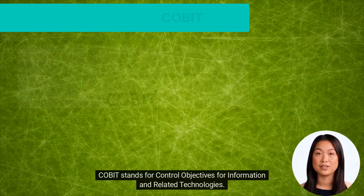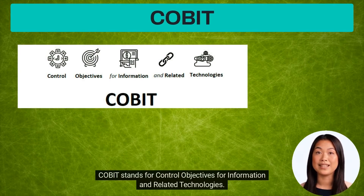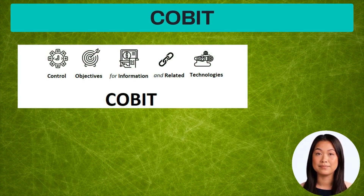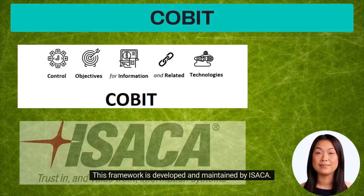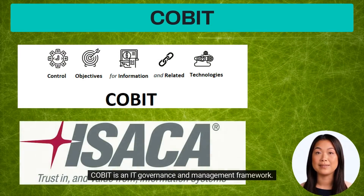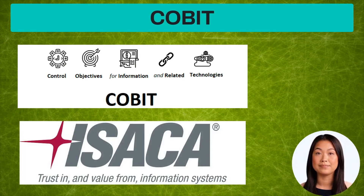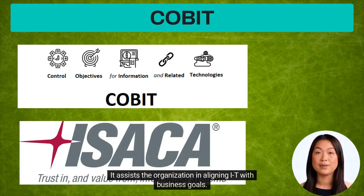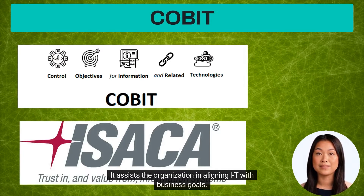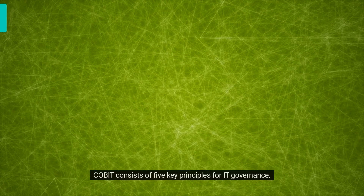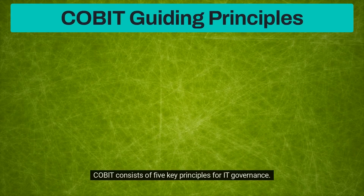COBIT stands for Control Objectives for Information and Related Technologies. This framework is developed and maintained by ISACA. COBIT is an IT governance and management framework that assists the organization in aligning IT with business goals. COBIT consists of five key principles for IT governance.